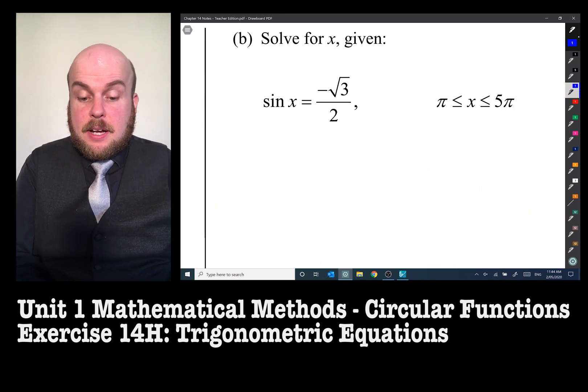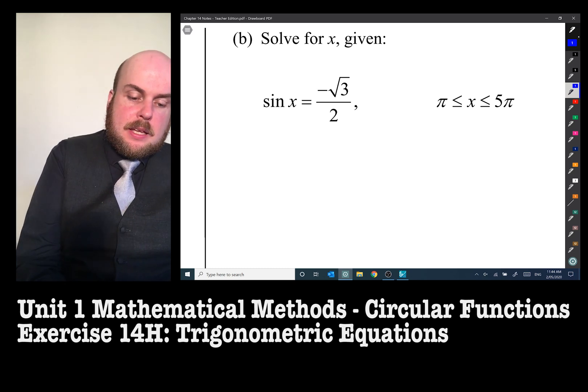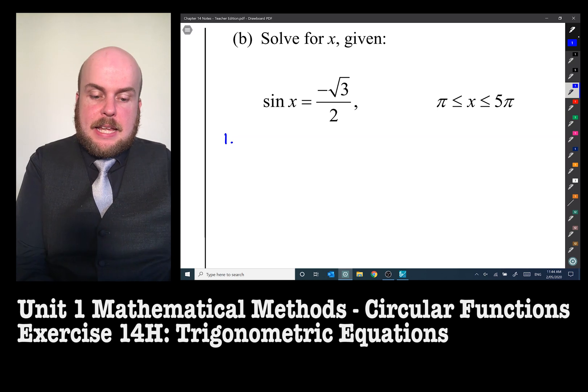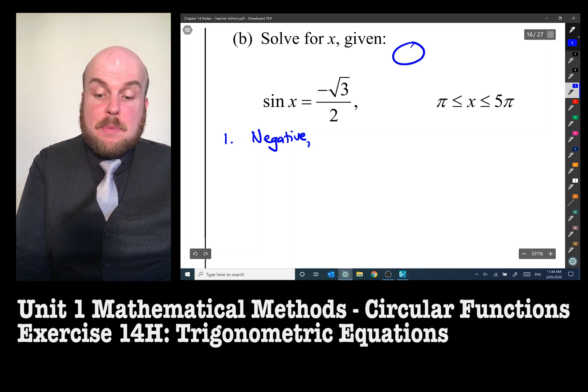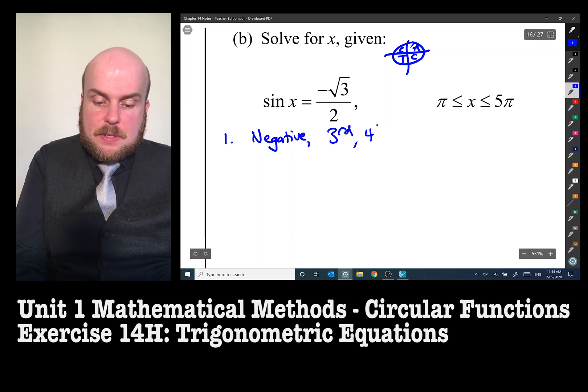Solve for x given sine x is equal to negative root three on two. And we've been given a domain that's between pi and five pi. Is the answer positive or negative? It is a negative answer. So therefore for sine, where is sine positive and negative? So it's negative in the third and fourth quadrants.